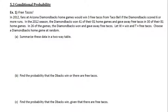Let W equal a win and T equal free tacos. Choose a Diamondbacks home game at random. Part A says summarize these data in a two-way table. So we've got a couple different scenarios — either they win or they lose, or they give free tacos or they don't give free tacos. So let's make our two-way table based on that.